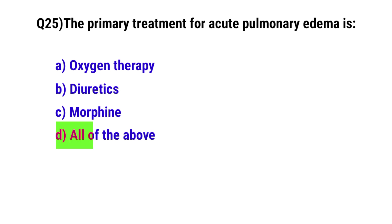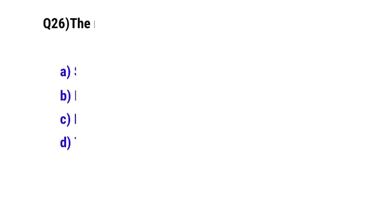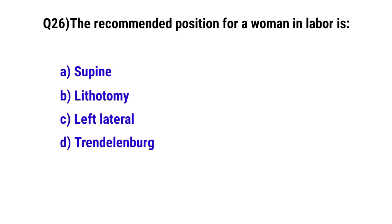Question No. 25. The primary treatment for acute pulmonary edema is? The correct option is D: All of the above.